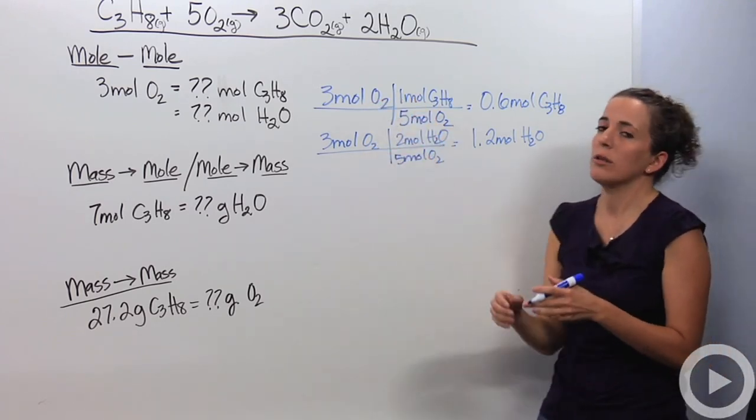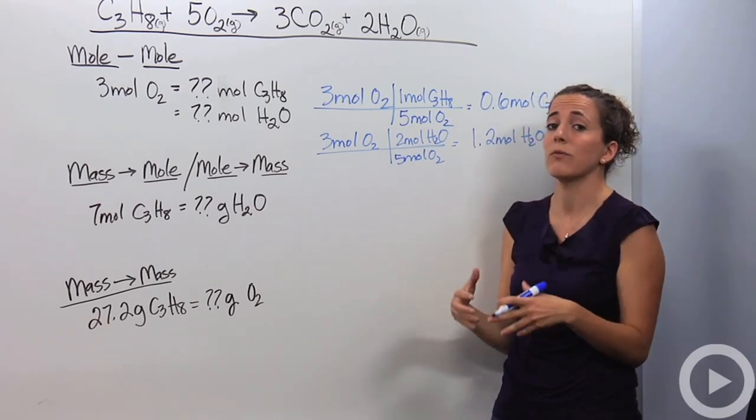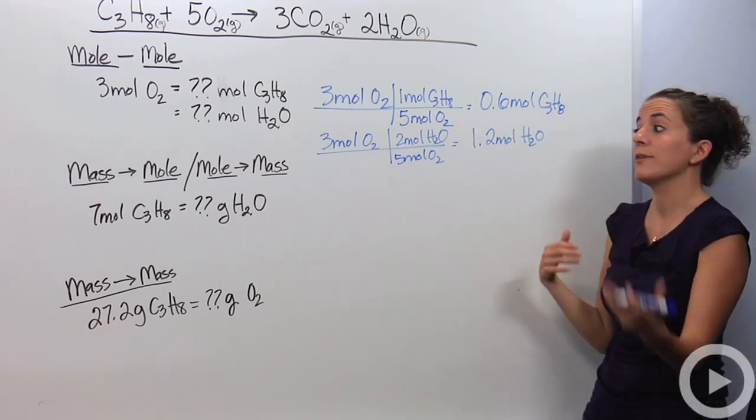To sum this up, if I have 3 moles of O2, I can produce 1.2 moles of water. But how often are we going to be able to use the word moles? Not very often. You're probably going to typically use mass, and mass is in forms of grams. So we actually have to go a little bit further.